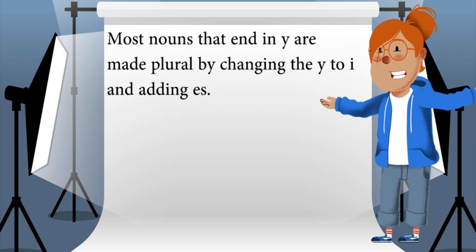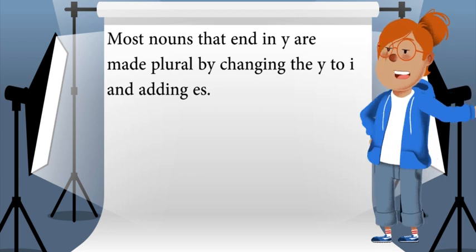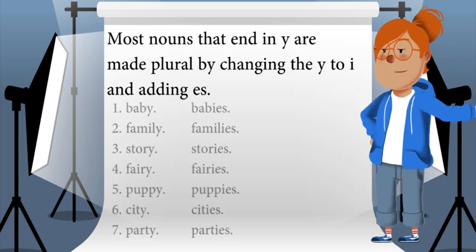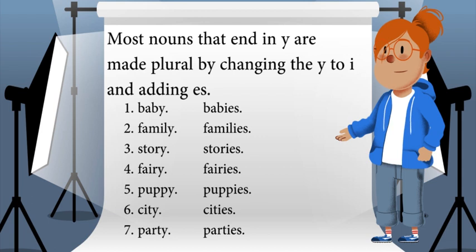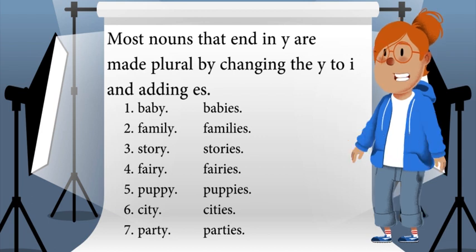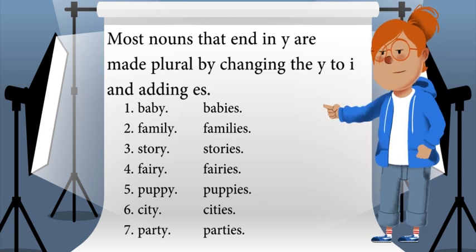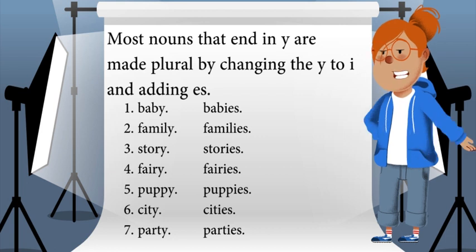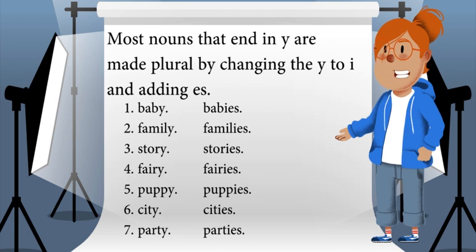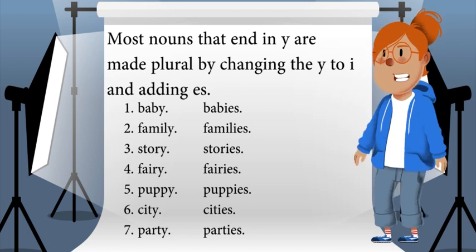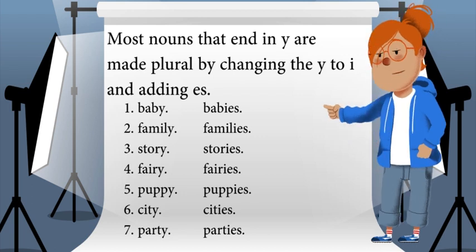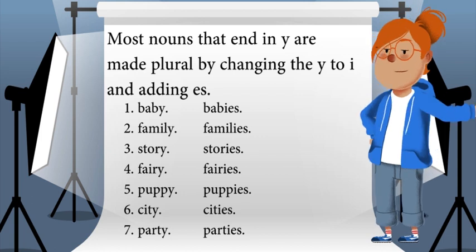Most nouns that end in y are made plural by changing the y to i and adding es. Baby becomes babies, family becomes families, story becomes stories, fairy becomes fairies, puppy becomes puppies, city becomes cities, party becomes parties.